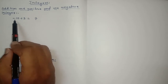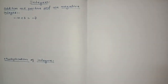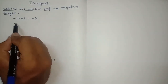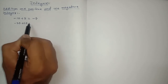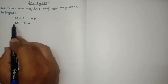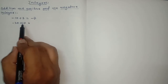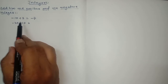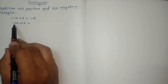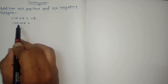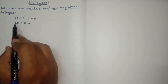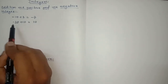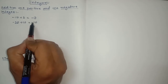Which number is bigger here? 10 is the bigger number and its sign is minus, so the answer will be minus 7. Suppose the next question is minus 20 plus 10. Signs are different, so we subtract. When you subtract 20 and 10 you get 10, and the sign of the bigger number is minus, so the answer is minus 10.